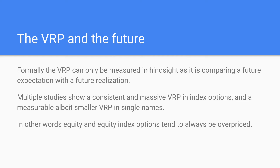For single names — stocks like Apple or Tesla — there is also a VRP for single names. However, stocks tend to be more volatile than the index, so the VRP for single names is actually smaller, but it is still there. What this means in general is that no matter where you look, you are overpaying for your options. We are overpaying because otherwise no one will dare to sell them to us — that's the nature of the game.